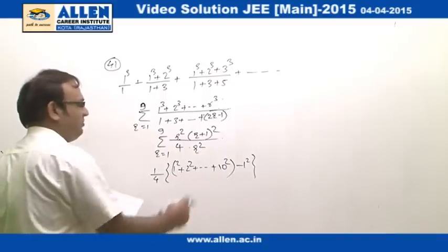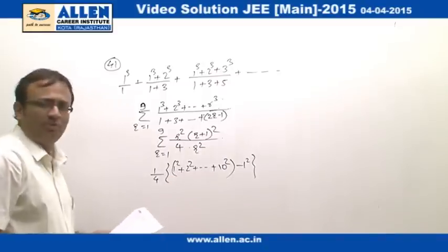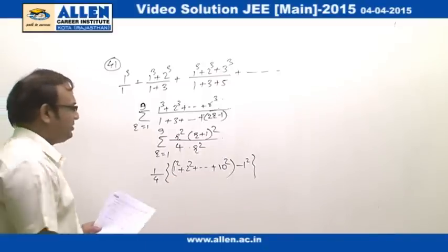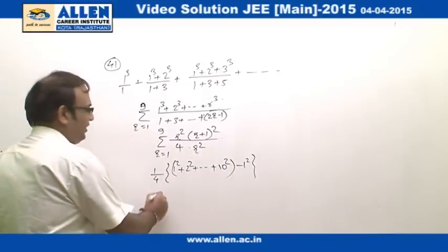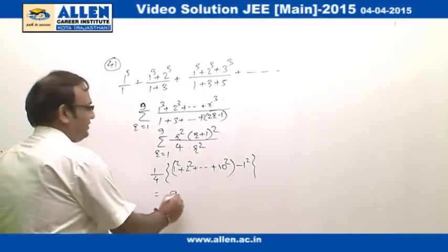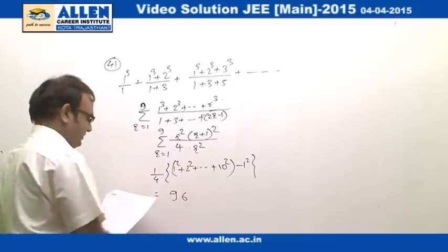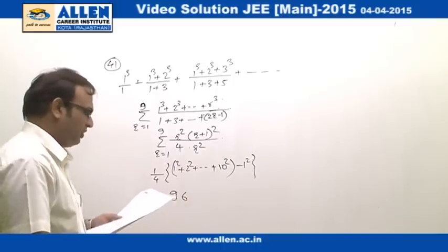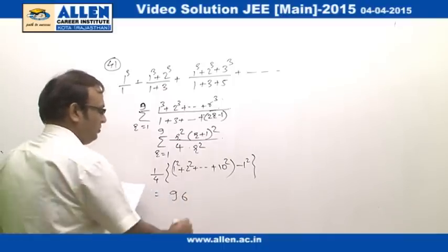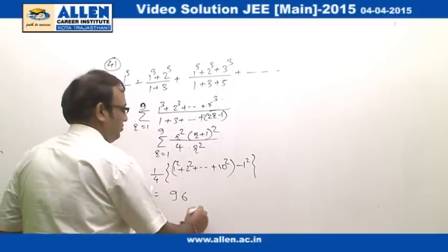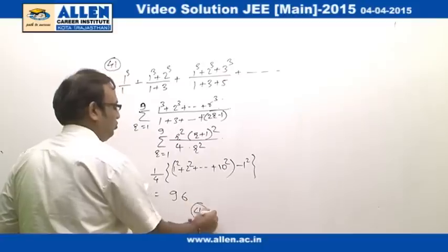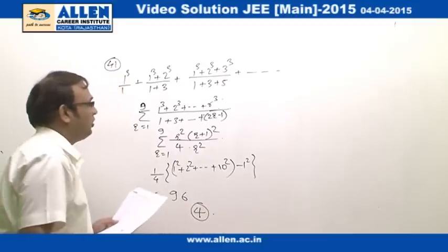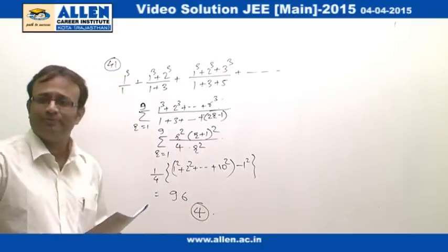This can be simplified using the sum-of-squares formula, and by solving we get the answer as 96. This is option number 4, which is the correct option.